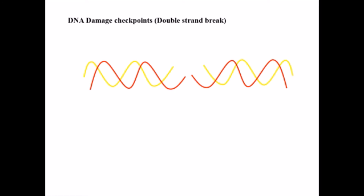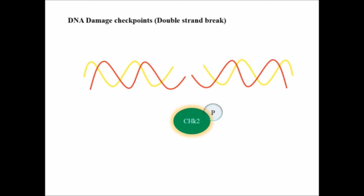Once the cell has entered S phase and DNA replication is completed, another checkpoint will decide whether the DNA is ready for distribution into two daughter cells. It will check whether there are breaks or whether DNA was correctly replicated. When there is a double-strand break in DNA, ATM is activated, which activates CHK2 by phosphorylating it. CHK2 then activates CDC25A, leading to arrest at G1 and S phase.